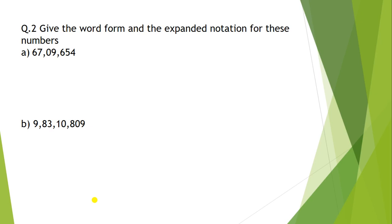Can you write the word form for this number? Correct. The word form for this number is sixty-seven lakh, nine thousand, six hundred fifty-four.